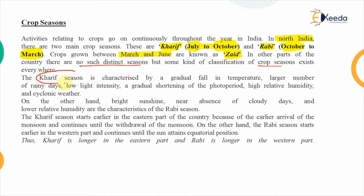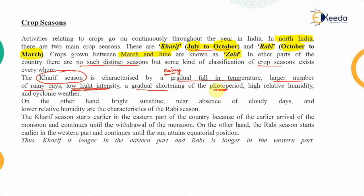The Kharif season is characterized by a gradual fall in temperature. As the rainy season starts, there is continuous rainfall, a gradual fall in temperature, a larger number of rainy days from July to October, low light intensity due to cloud cover, and a gradual shortening of the photoperiod — meaning the duration of sunshine decreases. Humidity is very high and there is cyclonic weather.